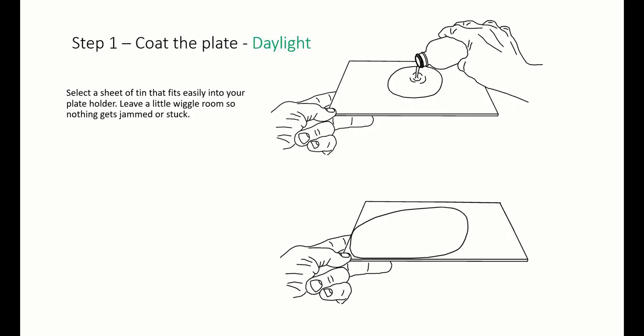The process. Step 1: Coat the plate. This can be done in daylight. Select a sheet of tin that fits easily into your plate holder. Leave a little wiggle room so nothing gets jammed or stuck. Peel the plastic coating from the back side of the tin.